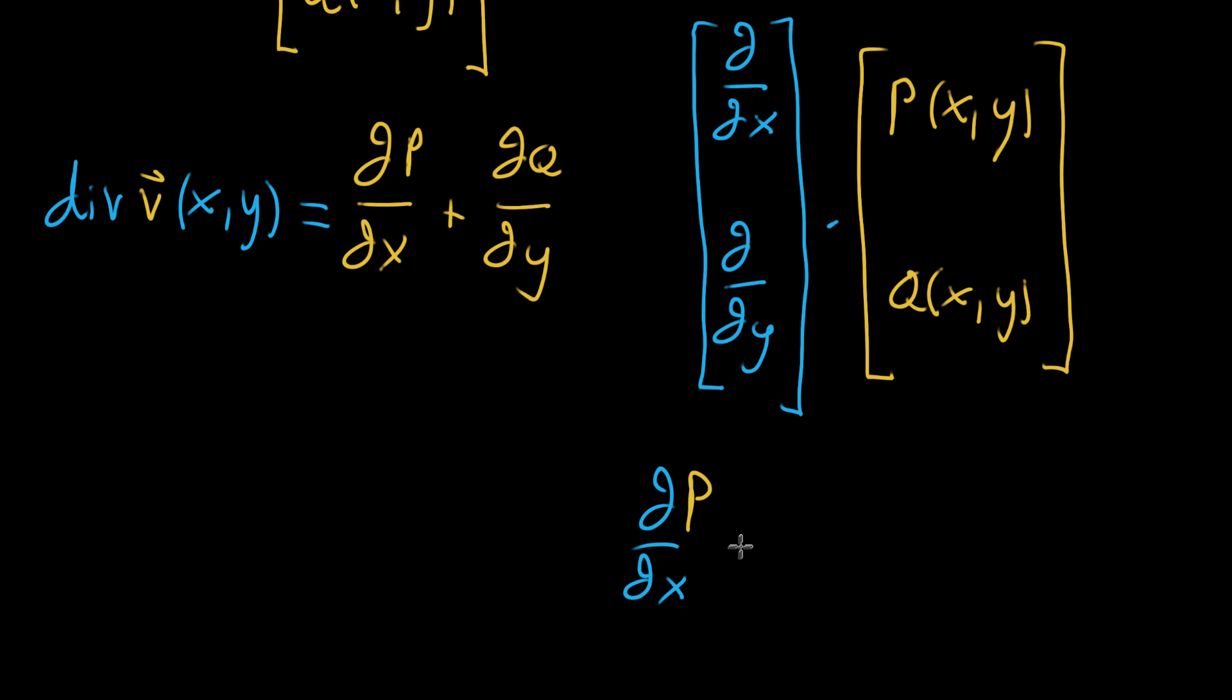So you take that, and as per the dot product, you then add what happens if you take this partial operator, this partial partial y, and quote-unquote multiply it with q, which in the case of an operator, means you kind of give it the function q, and it's gonna take its partial derivative.